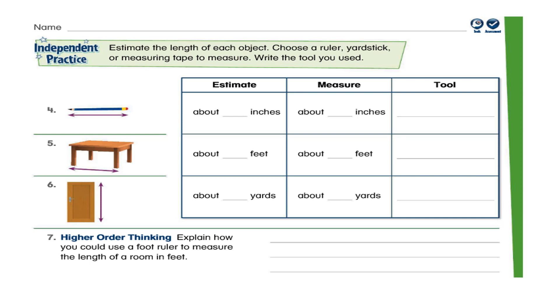Next page, what do we have? Estimate the length of each object. Choose a ruler, yardstick, or measuring tape to measure. Write the tool you used. So, first of all, we have to discuss about the tools. Choose a ruler, a yardstick, or a measuring tape. So, ruler. We can use ruler to measure the short objects or the small objects. Or we can use ruler to measure the inches and sometimes one foot. What about yardstick?